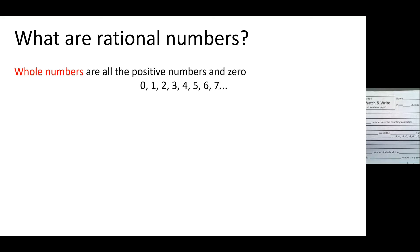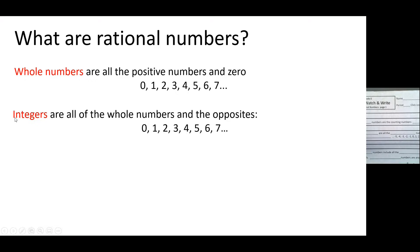Whole numbers are basically the counting numbers starting with zero that you have known probably your whole life. This year we were introduced to integers. Integers are all the whole numbers — zero, one, two, three, four, five and so on — but now we also include their opposites. The opposite of one is negative one, the opposite of negative two is two, the opposite of three is negative three.